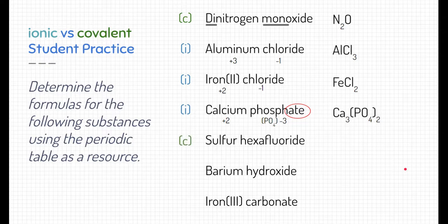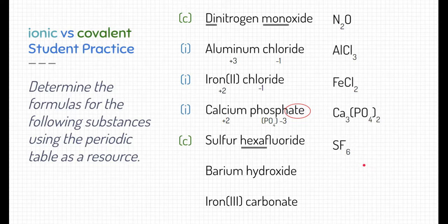The next example is a covalent compound: sulfur hexafluoride. We know that because sulfur and fluorine are both nonmetals. The prefix also helps determine this is covalent, since only covalent compounds get prefixes in their name. So this substance is SF6 — one sulfur and six fluorines.